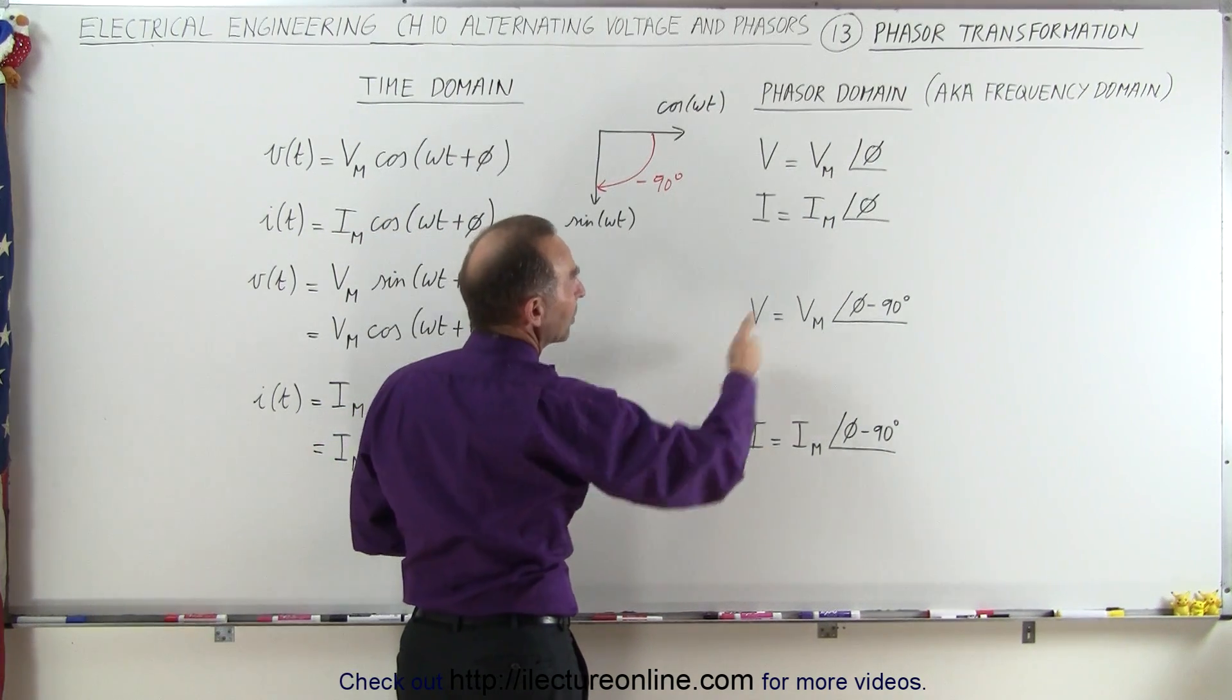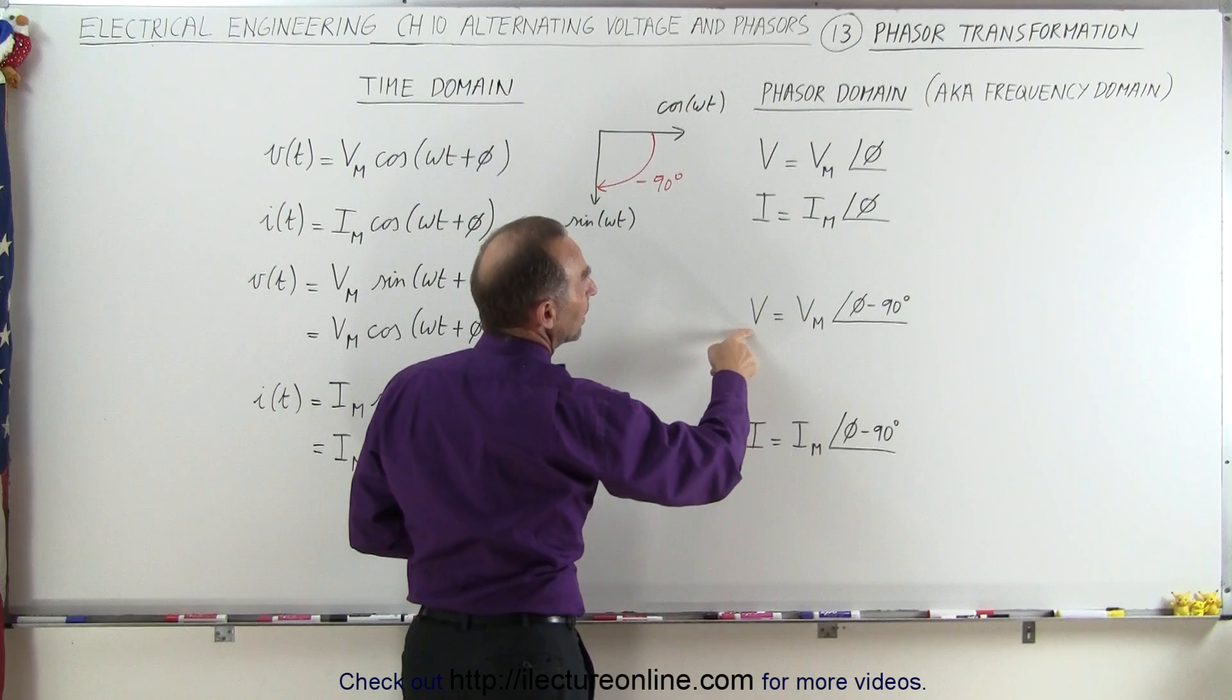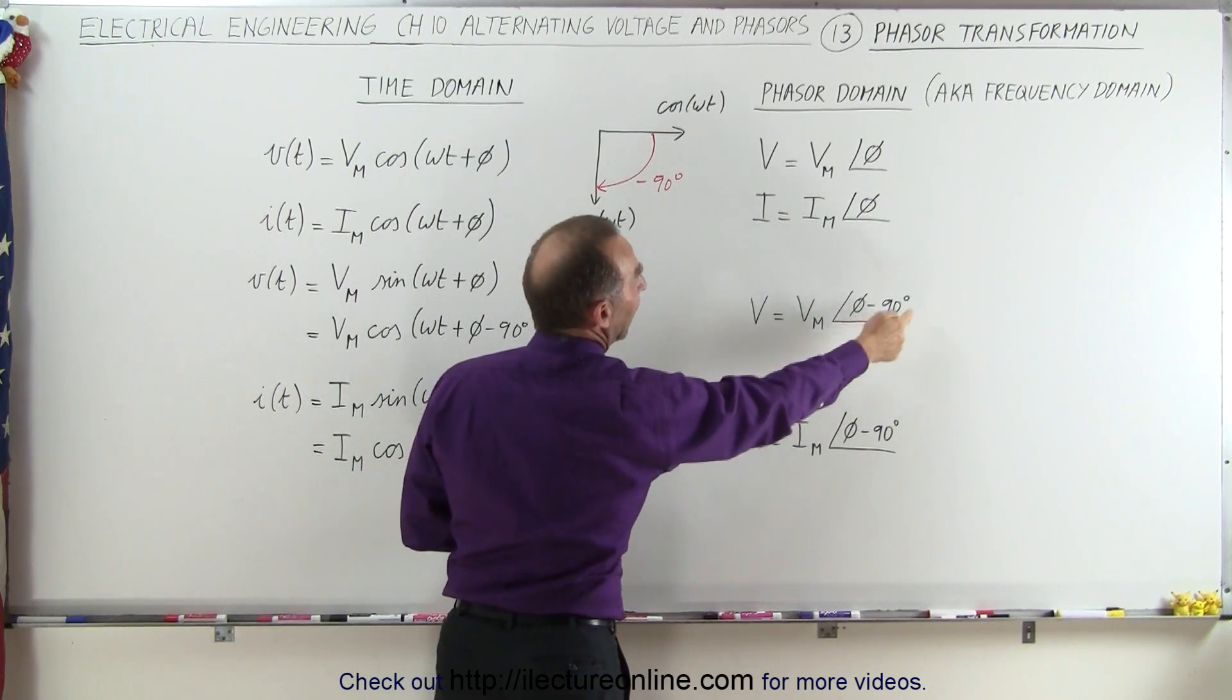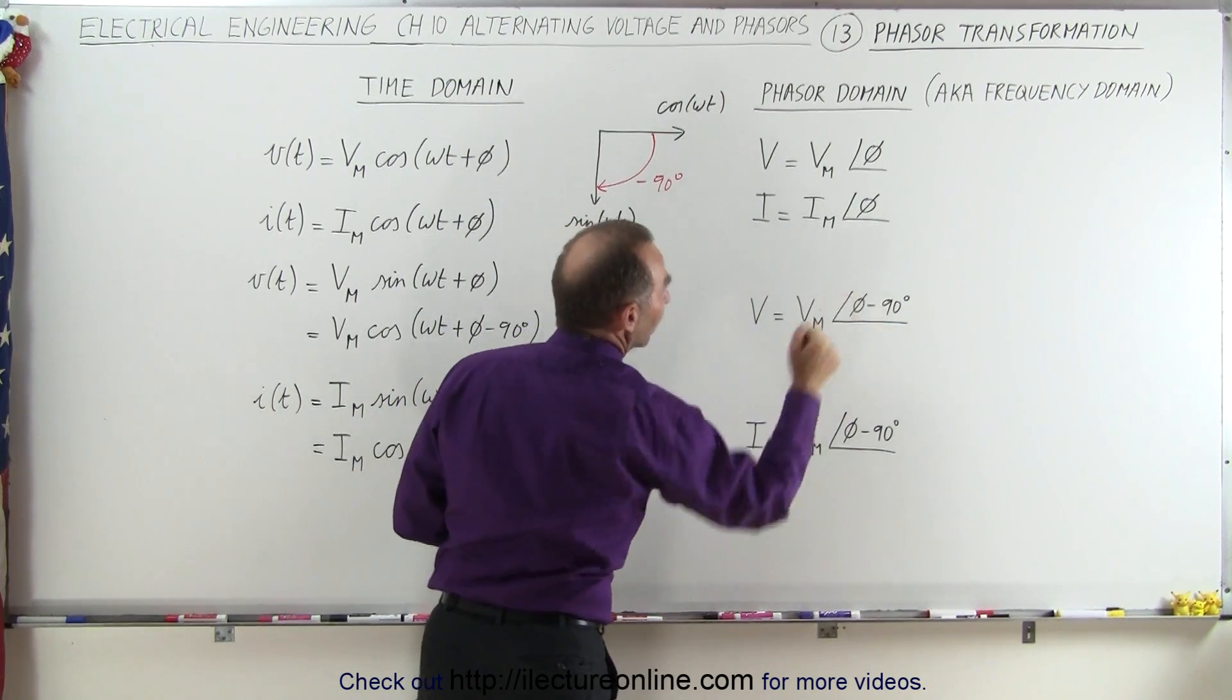So the vector, that would be the phase vector here, would be equal to the maximum, the magnitude of the vector, times the phase difference, which is the phi minus 90 degrees.